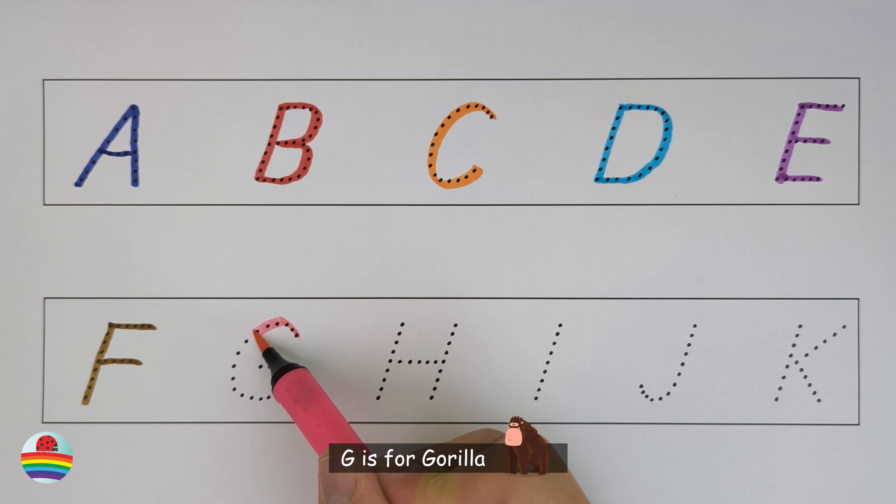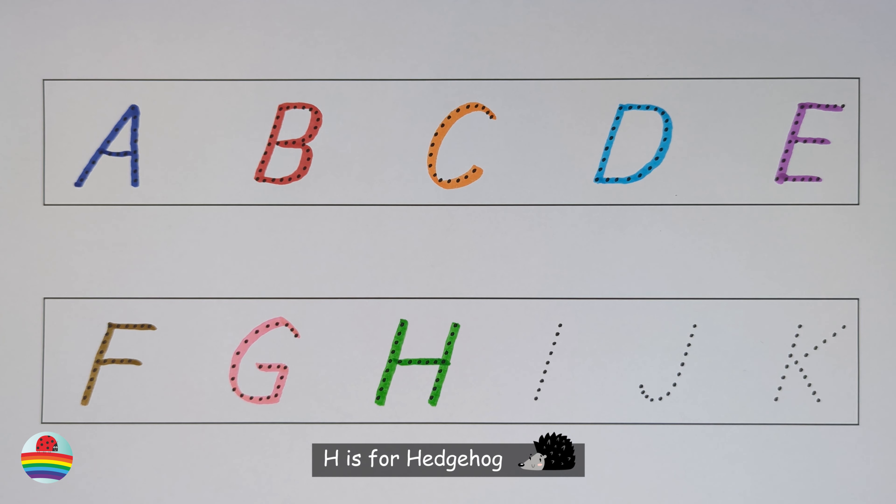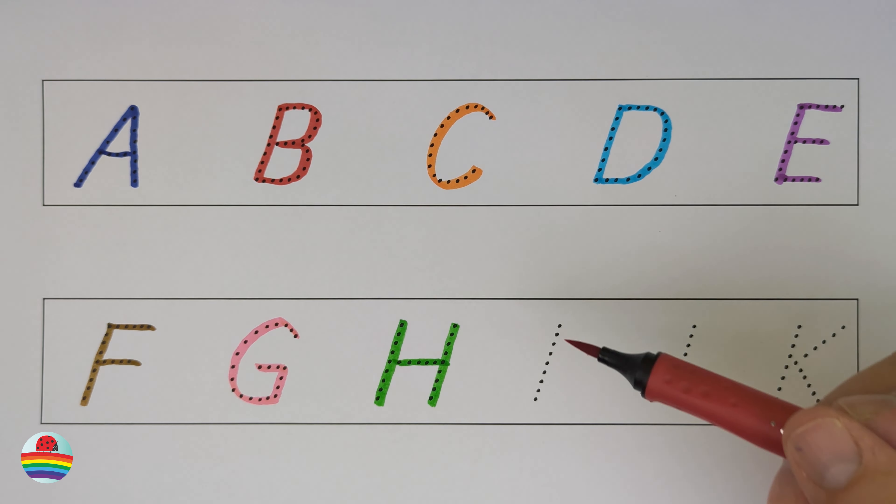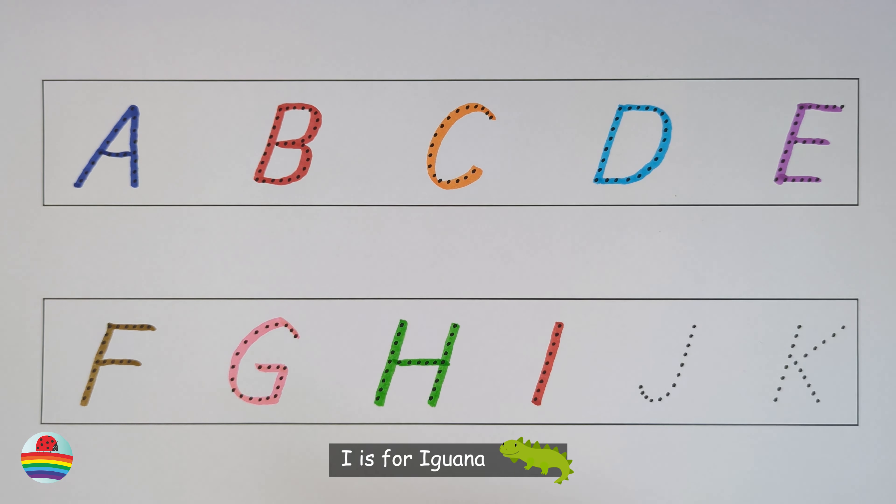G. G is for gorilla. G. H. H is for hedgehog. H. I. I is for iguana. I.